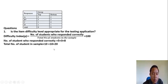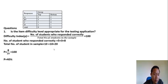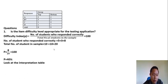So, 5 plus 3 gives us 8. Then 8 divided by 20, multiplied by 100, gives us 40 percent.